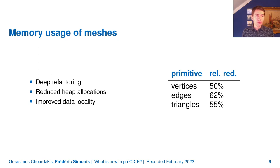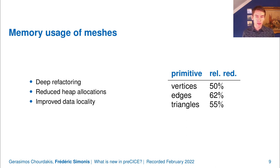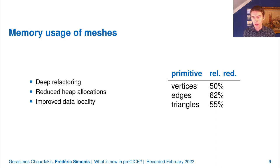We also improved the memory usage of meshes through a deep refactoring, removing unused and unnecessary functionality from the mesh package. This reduces heap allocations tremendously and improves data locality, so you will notice an improvement in runtime, especially during the initialization phase. In terms of memory usage, we reduced usage of the pure mesh itself by 50% across the board — especially noticeable if you use larger point cloud-based meshes.